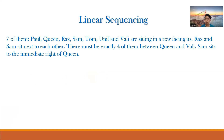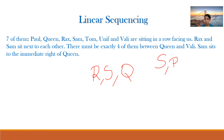Let's start solving. They told us Rax and Sam sit next to each other, so they always go together — either R, S or S, R. Sam sits to the immediate right of Queen, meaning Queen has Sam immediately to her right. If we considered S, R order, we would not be able to seat Queen there, so that arrangement is ruled out. The pair is Queen–Sam–Rax.